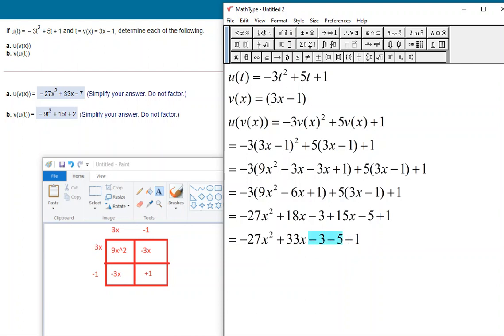And then we're going to add up all of these values here at the end. The negative 3, the negative 5. That would make negative 8. But plus 1 is going to make this whole thing negative 7. And that would be our expanded version of that function composition for u of v of x. As you can see, that does match the correct answer.